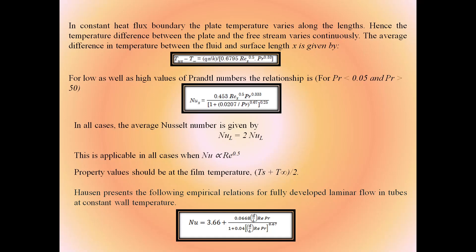Haussen presents the following empirical relation for fully developed laminar flow in tubes at constant wall temperature: NU = 3.66 + [0.0668×(D/L)×Re×Pr] / [1 + 0.04×(D/L×Re×Pr)^(0.67)].